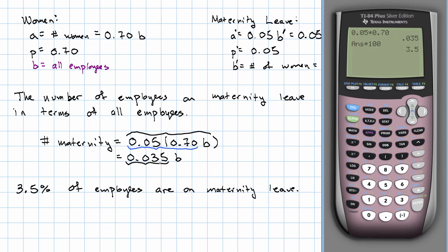So notice what we've done here. We haven't figured out how many employees are on maternity leave. We don't even know how many employees there are. We just wrote an expression for the number on maternity leave in terms of the total employees, and based on that, we were able to interpret the simplified expression to show us the percent that were on leave.